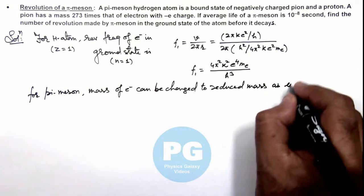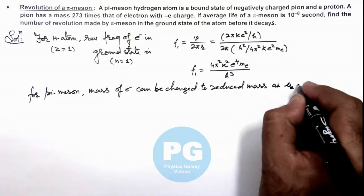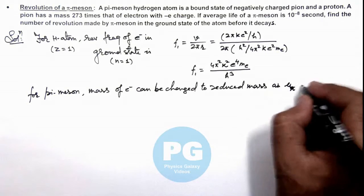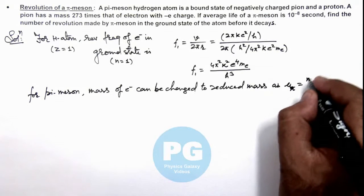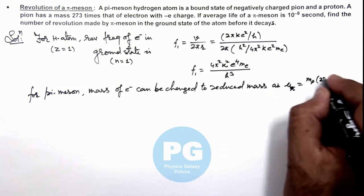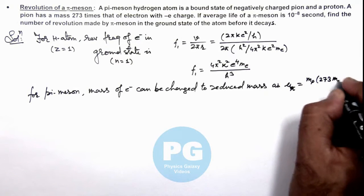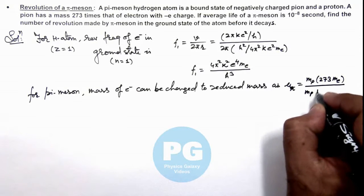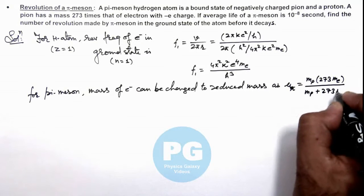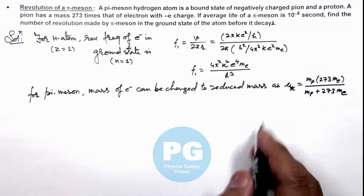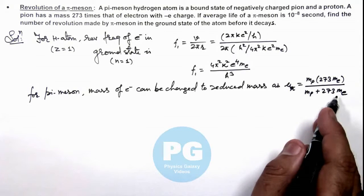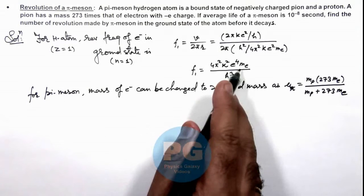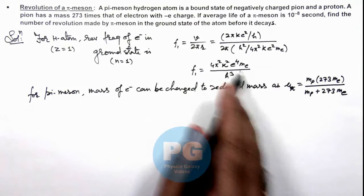If we change it to reduced mass, we'll analyze the whole situation with respect to the nucleus. The reduced mass is given as μ = (m_p × 273m_e)/(m_p + 273m_e). This is m₁m₂/(m₁+m₂). So in this situation, m_e should be replaced by this mass of pion.